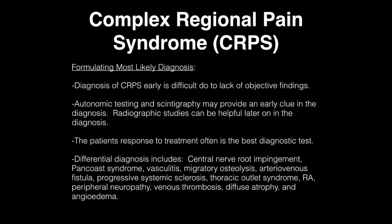Formulating the most likely diagnosis: diagnosis of complex regional pain syndrome early is difficult due to lack of objective findings. Autonomic testing such as scintigraphy may provide an early clue. Radiographic studies can be helpful later on. Patients' response to treatment is often the best diagnostic test. Differential diagnoses include central nerve root impingement, Pancoast syndrome, vasculitis, migratory osteolysis, arteriovenous fistula, progressive systemic sclerosis, thoracic outlet syndrome, rheumatoid arthritis, peripheral neuropathy, venous thrombosis, diffuse osteopenia, and angioedema.